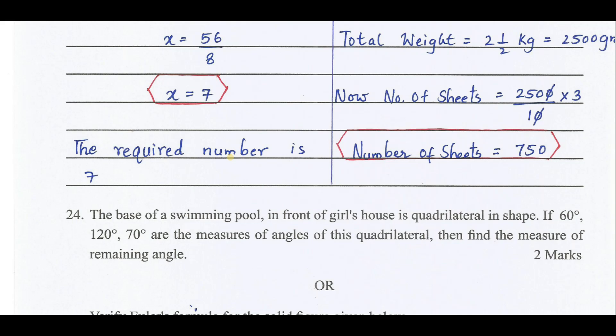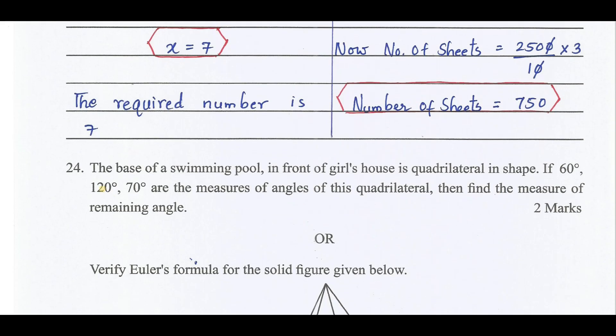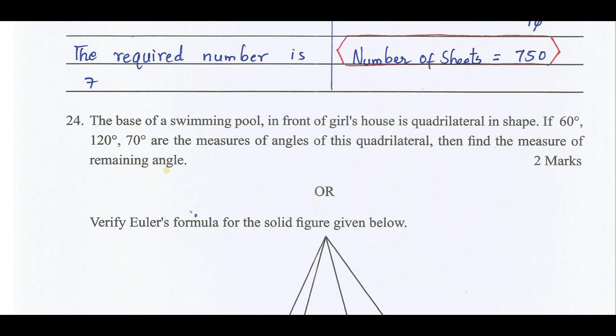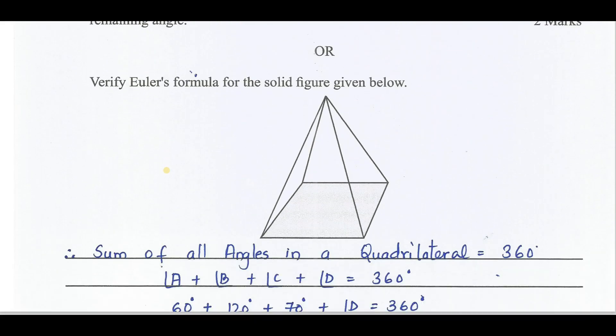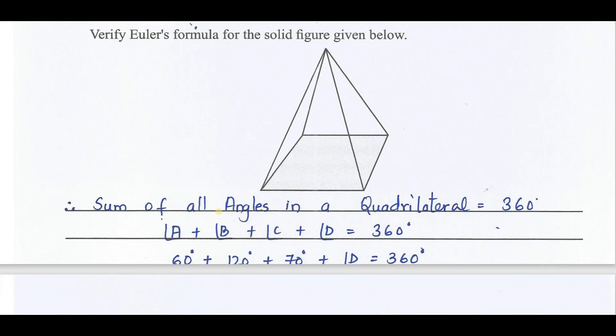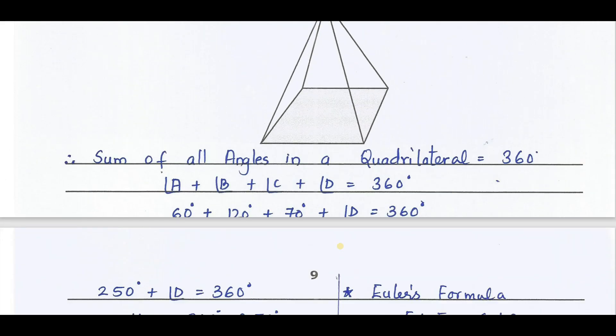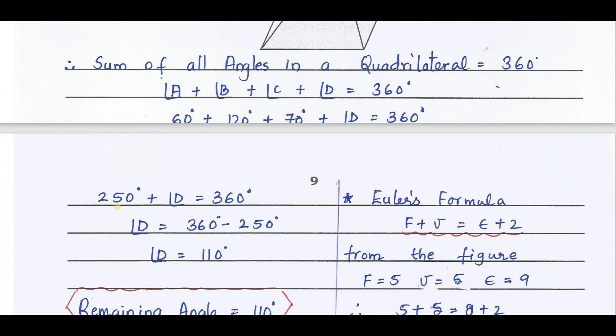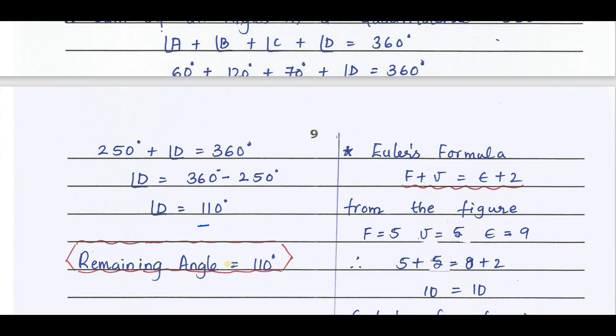The base of a swimming pool in front of a girl's house is quadrilateral in shape. If 60 degree, 120 degree and 70 degree are the measures of the angles of this quadrilateral, then find the measure of remaining angle. The sum of angles in a quadrilateral is 360. Angle A plus angle B plus angle C plus angle D equals 360. Angle A is 60 degree, angle B is 120, angle C is 70. We should find out angle D. D equals 360 minus 250. We get the remaining angle as 110 degree.